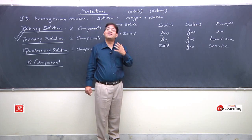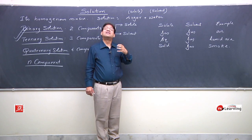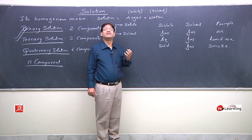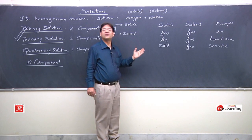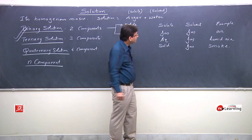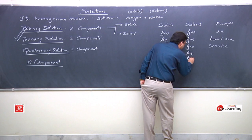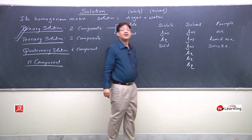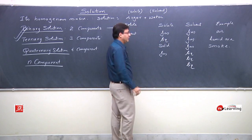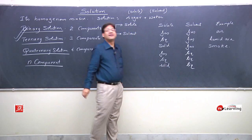All three of these — gas in gas, liquid in gas, solid in gas — are called gaseous solutions because the final physical state of the solution is gaseous. We may also have liquid solutions, which are also of three types: either gas dissolved in liquid, or liquid dissolved in liquid, or solid dissolved in liquid.